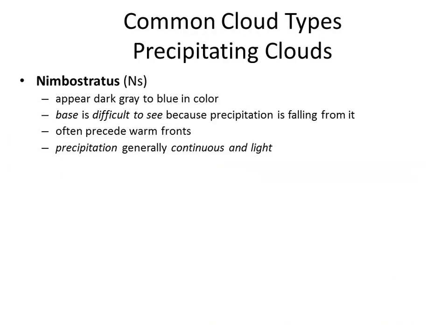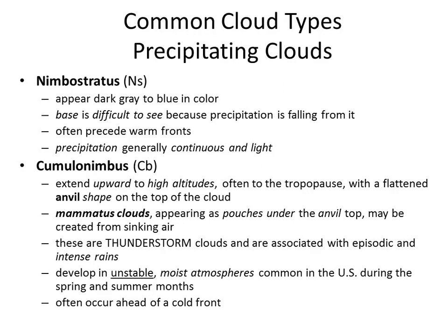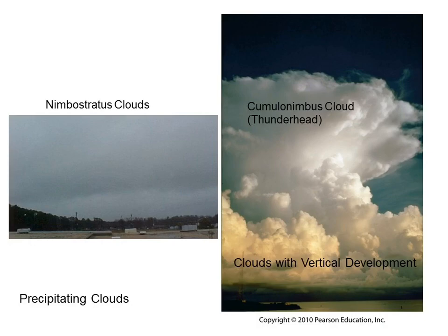Nimbostratus — precipitating, stratus meaning flat. Then the cumulonimbus cloud — those are your thunderstorm clouds. I'm going to show you a picture of these pouchy-looking things that can be associated with your thunderstorm cloud underneath the anvil portion. Here's a picture of cumulonimbus and nimbostratus. Thank you, Wikipedia.